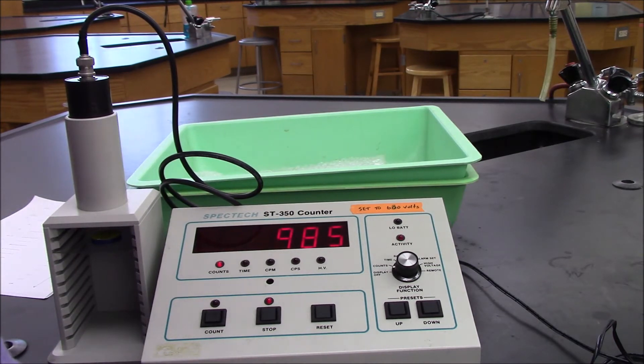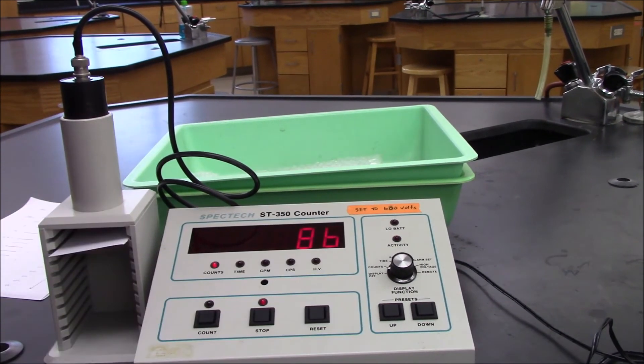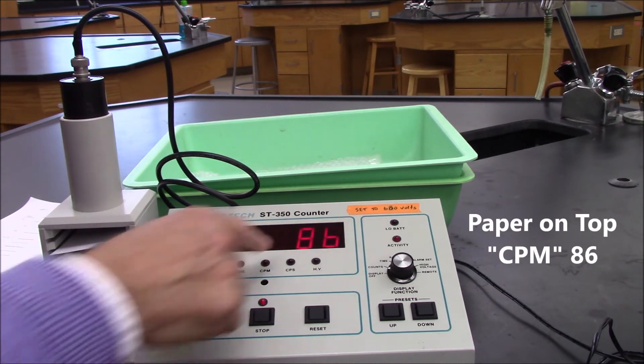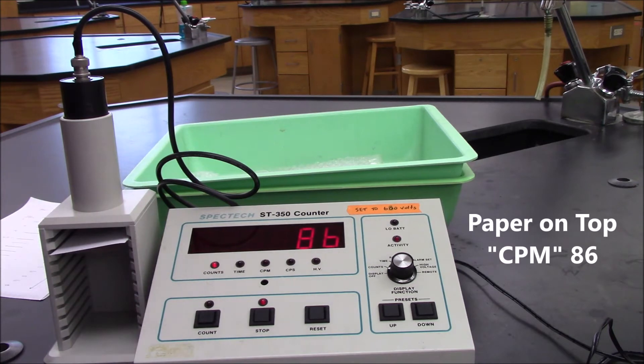Now I'm going to put a piece of paper over the sample, and we'll see how much of the alpha radiation gets through the paper. So now we've taken the same alpha source, we've put it on the same shelf, and we've just laid a piece of paper over, and you can see we were able to block a pretty high percentage of the radioactivity just with the piece of paper.